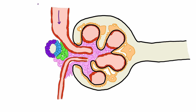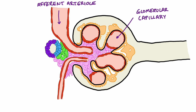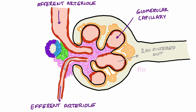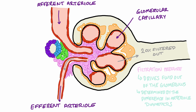Blood enters the glomerulus via the afferent arteriole. It then enters a glomerular capillary where about 20% of the plasma is filtered out into the Bowman's space. The remaining 80% leaves the glomerulus via the efferent arteriole. The force driving plasma out of the glomerulus into the Bowman's space is called the filtration pressure, which is determined by the difference in diameter of the afferent and efferent arteriole. The afferent arteriole has a much larger diameter compared to the efferent arteriole, which creates positive pressure inside the glomerulus.